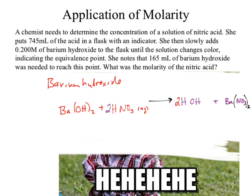Now, what do we do with that? She adds barium hydroxide until the solution changes color — she's talking about the equivalence point. At equivalence, these two species are gone — they have chemically reacted in the perfect ratio to eliminate each other and form only products. The equivalence point means those two species have disappeared, which means I can now convert between those species: two moles of nitric acid equals one mole of barium hydroxide.